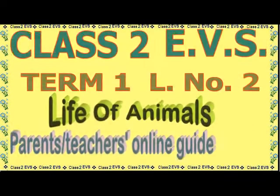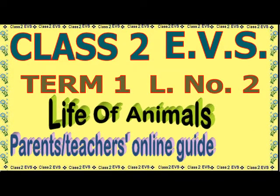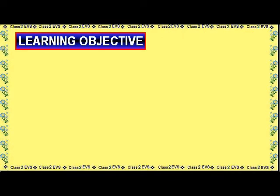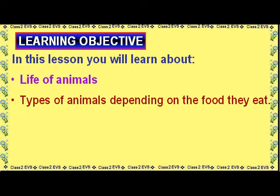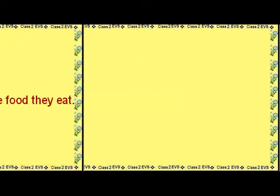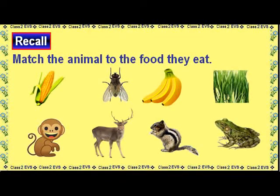Class 2 EBS Term 1 Lesson No. 2: Life of Animals. Learning Objective: In this lesson, you will learn about the Life of Animals, Types of Animals Depending on the Food they Eat, and Animals Shelter.